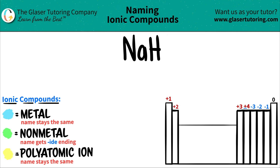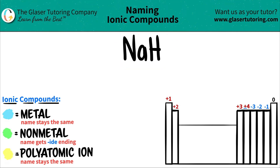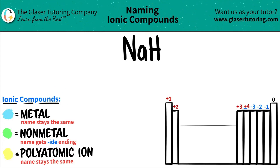Today we are going to be naming the ionic compound NaH. So we have two elements here. Let's see which one is a metal and which one is a nonmetal, because if it's an ionic compound and you have two elements, one has to be the metal and one has to be the nonmetal. So if I look on here,